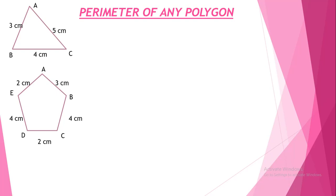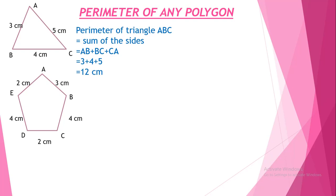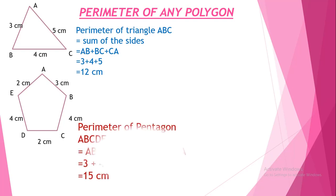Now let's find the perimeter of any polygon. A polygon is a closed figure bounded by line segments. The first polygon here is a triangle bounded by 3 line segments. The perimeter of this triangle is the sum of the 3 sides AB, BC, and CA — that is 3 plus 4 plus 5, which gives 12 cm. The next figure is a polygon bounded by 5 line segments, called a pentagon. The perimeter of the pentagon is found by adding all 5 sides: 3, 4, 2, 4, 2 — we get 15 cm.